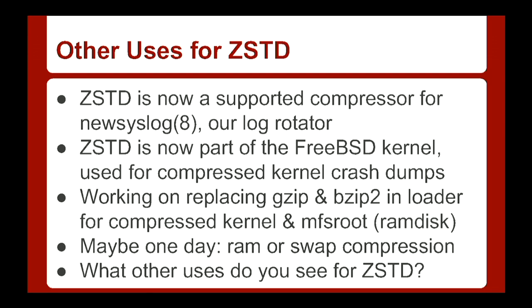ZStandard support is also built into newsyslog, our log rotator on FreeBSD, so you can compress your logs with that instead of xzip — which can be quite a bit faster, though xzip can still provide slightly better compression if you really want it. If you turn ZStandard up to level 19, it gets really slow but compresses quite well. It's part of the kernel now for crash dumps, and we look forward to replacing gzip and bzip for compressed kernels, MFS roots, and RAMdisks.